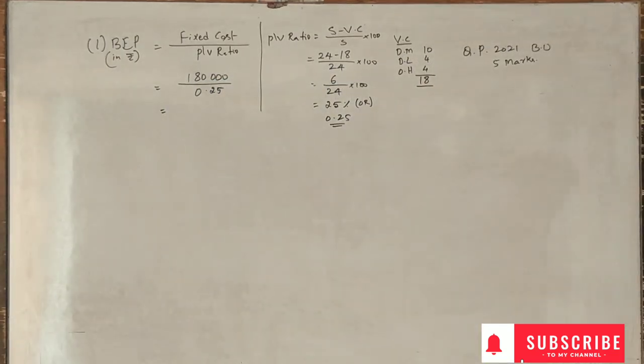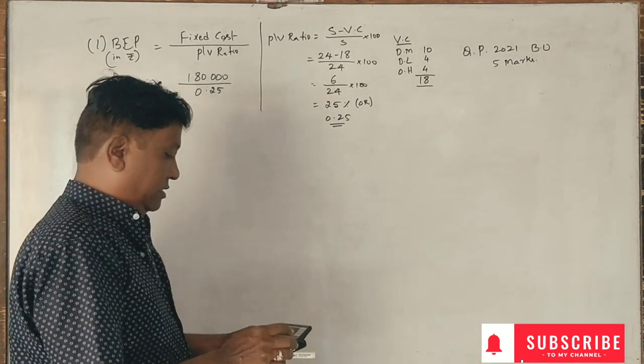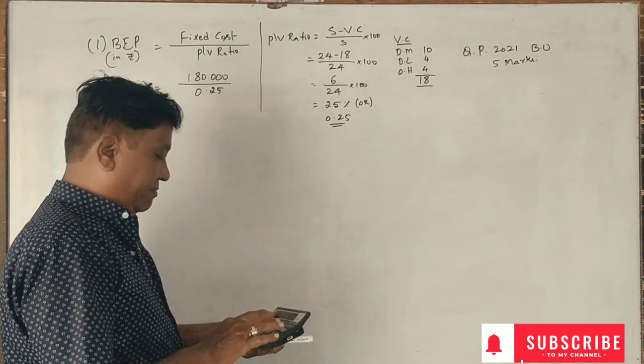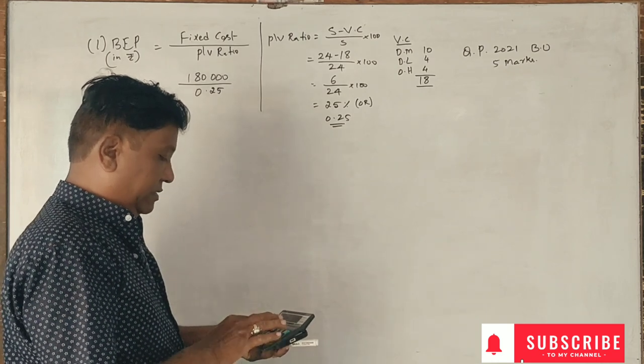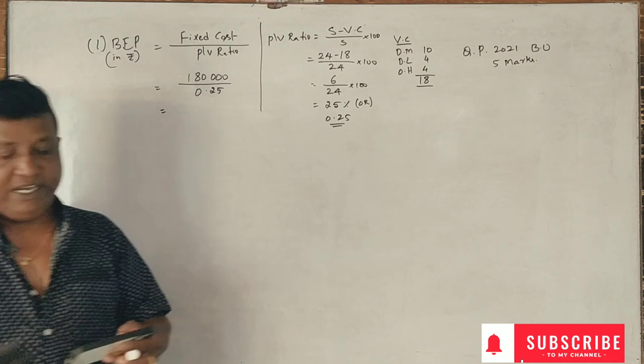Break-even point in rupees: 1,80,000 divided by 0.25 is 7,20,000 rupees.